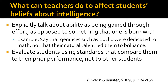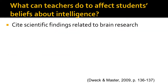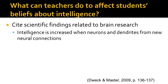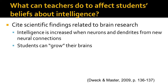Teachers can also affect students' beliefs about intelligence by evaluating students using standards that compare them to their prior performance, not to other students. Finally, researchers have found that teachers can affect students' beliefs about intelligence by citing scientific findings related to brain research. In some studies, researchers have shown students how intelligence is increased when neurons and dendrites form new neural connections. By conveying these ideas through readings or videos, they have convinced students that they can grow their brains. These types of interventions have led to students changing their views of intelligence from more fixed views to more incremental views.